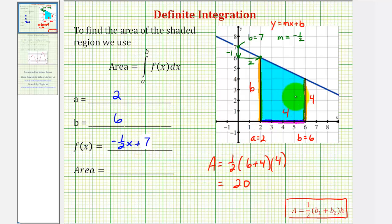So the area of the shaded region or the value of the definite integral would be twenty. To put all these pieces together and summarize, the area is equal to the definite integral of f(x), which is negative one-half x plus seven, from two to six, equals twenty.